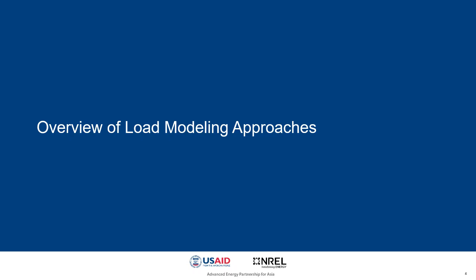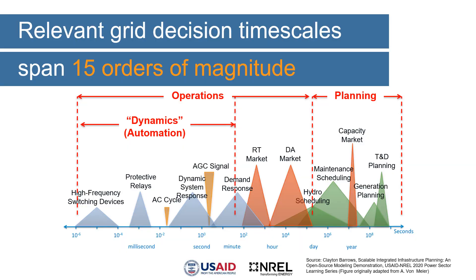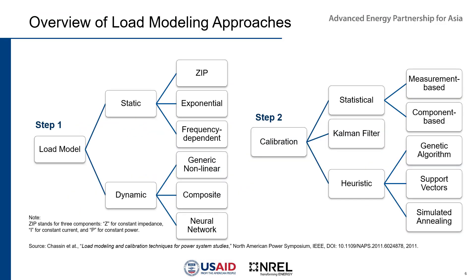The next slides will present an overview of load modeling approaches. This figure illustrates various aspects of grid operations and planning that require strategies and decisions at different time scales. These range from operations of high frequency switching devices in milliseconds to real-time operations in hours to generation and transmission planning in years. An overview of various load modeling approaches is presented. As earlier mentioned, load modeling involves two major steps: load model and calibration.